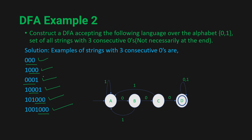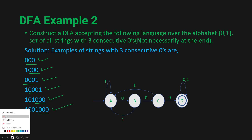All strings with three consecutive zeros are accepted — whether the zeros are the entire string, at the end, at the beginning, or somewhere in between. So we've seen two DFA examples today. I hope you understood the concept. If you have any queries, feel free to ask in the comment section below. Thank you very much.